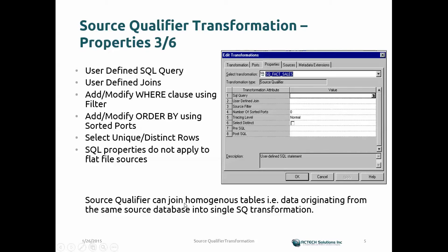The Source Qualifier can join homogeneous tables — that is, tables originating from the same source database — into a single Source Qualifier Transformation. User Defined Joins are applicable only if the source tables come from the same homogeneous environment. If it's Oracle, both tables must be Oracle; if it's SQL Server, both must be SQL Server. You cannot merge a table from SQL Server with one from a flat file or mix Teradata with Oracle in the Source Qualifier's User Defined Join property.